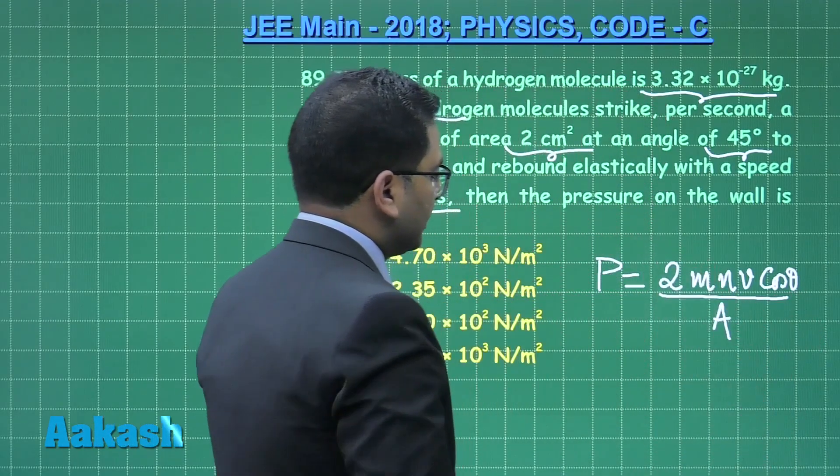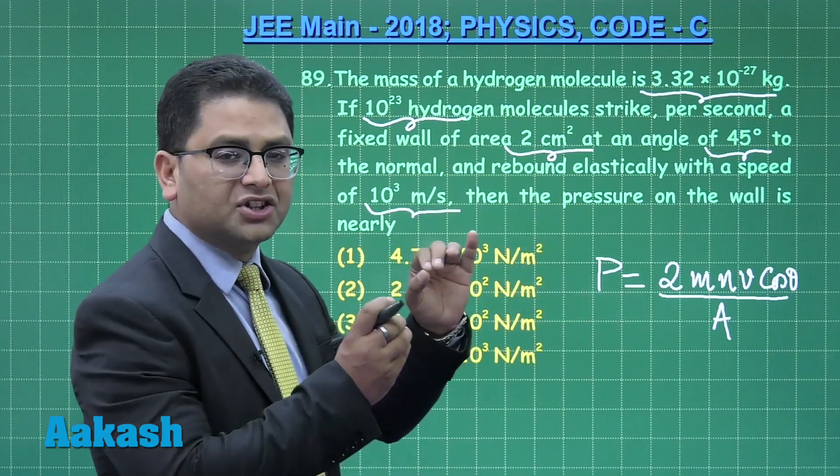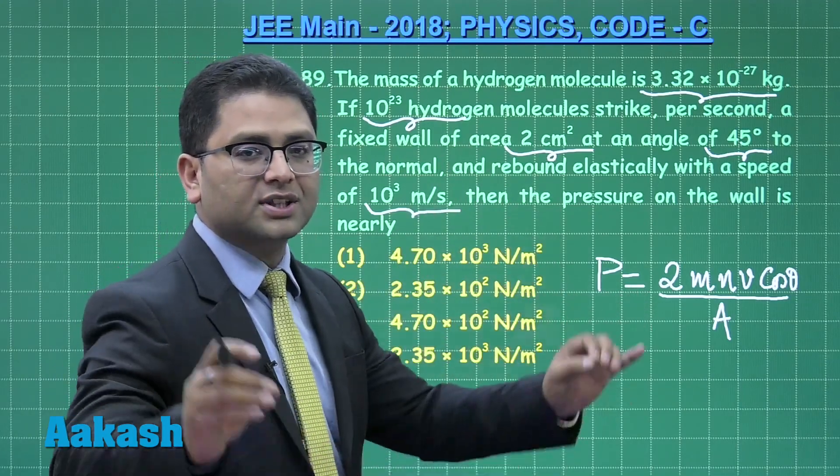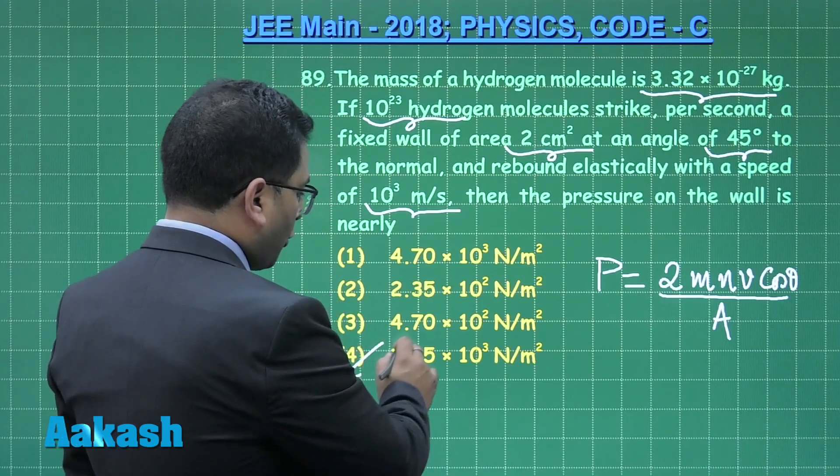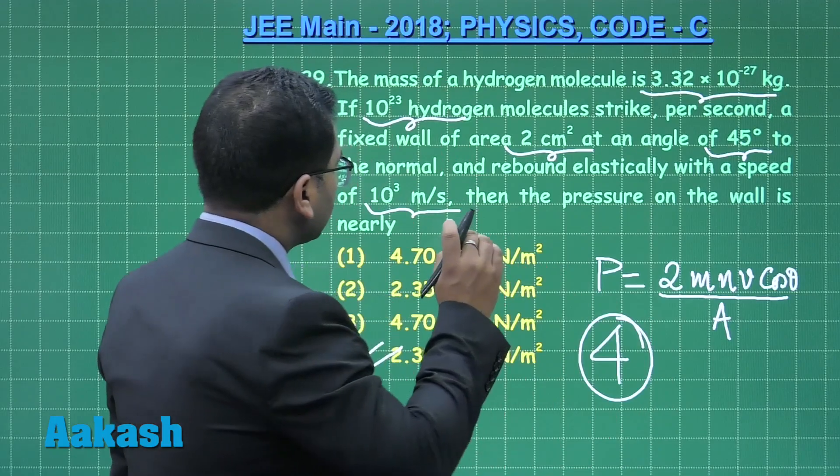Here the variables have the usual meaning. Everything is given, just plug the value, go into a smooth calculation. You would get option number 4 as the pressure, so option number 4 is the correct solution of question number 89.